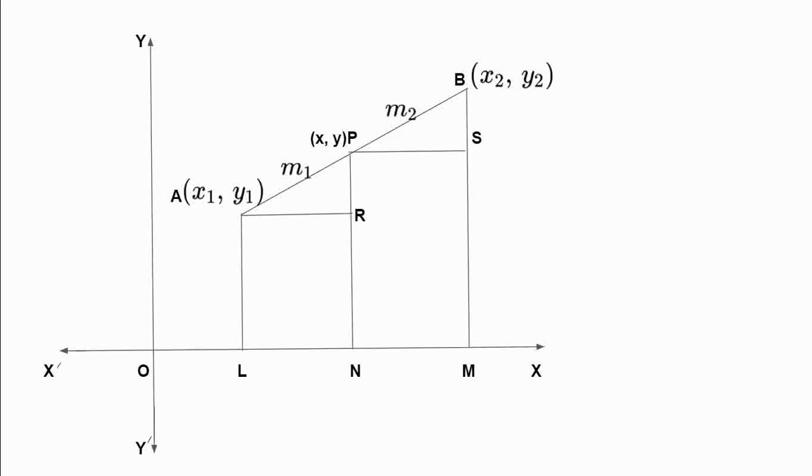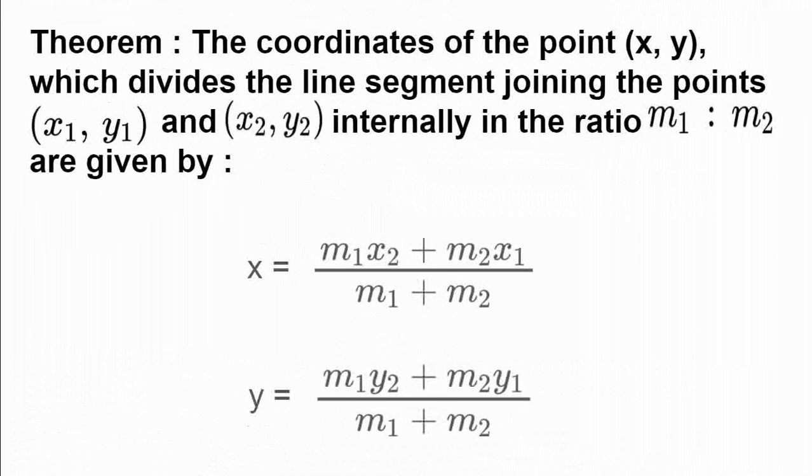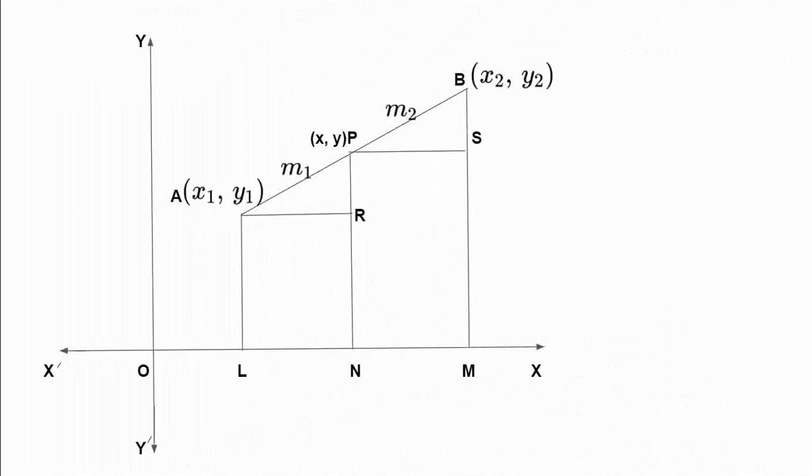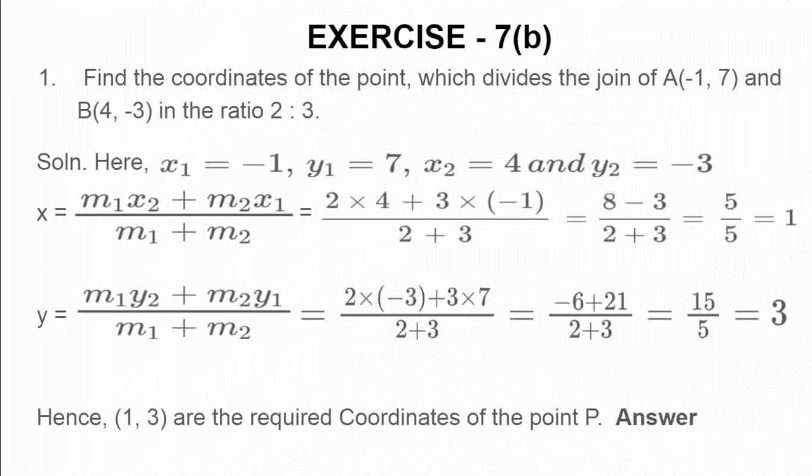This x is equal to m1 x2 plus m2 x1 divided by m1 plus m2, and the y coordinate is equal to m1 y2 plus m2 y1 divided by m1 plus m2. I think the concept is clear for you. Let us proceed to exercise 7b. In this exercise, in question number 1, you see, find the coordinates of the point which divides the join of a(-1, 7) and b(4, -3) in the ratio 2 is to 3.